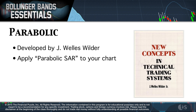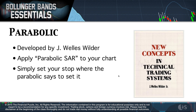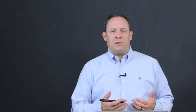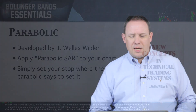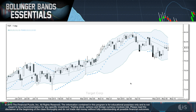What you need to do — this is really simple. I'm not going to go through the details of how you calculate a parabolic. You simply apply the parabolic SAR to your chart, and then wherever it tells you to set your stop, that's where you set your stop. You don't need a buffer, you don't need any additional components. You just say: here's the parabolic, that's where the dot says to set my stop, I'm going to set my stop there.